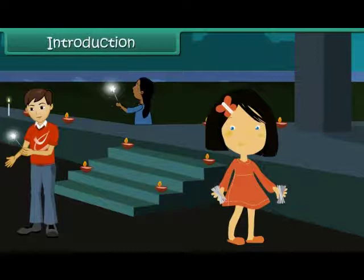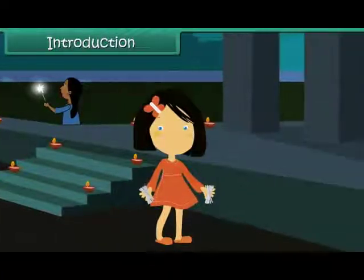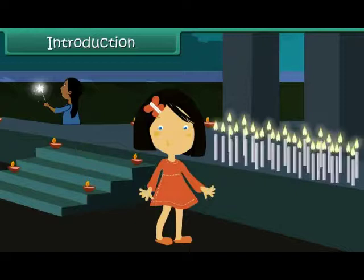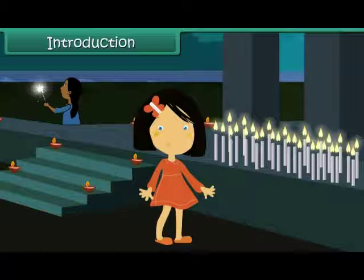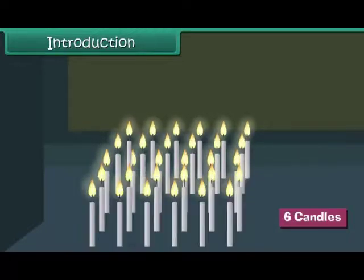Introduction. It is Diwali time. Vani is lighting candles in front of her house. She has 30 candles. She wants to arrange them in 5 rows. She wants to know the number of candles she must arrange in 1 row. She performs a quick calculation and decides to arrange 6 candles in every row. In this lesson, you will learn multiplication and division.